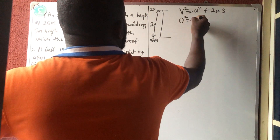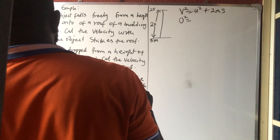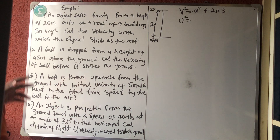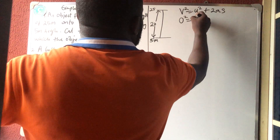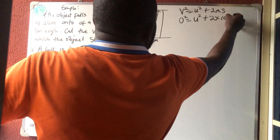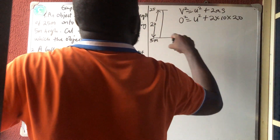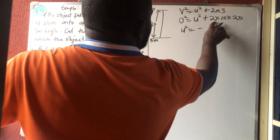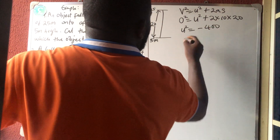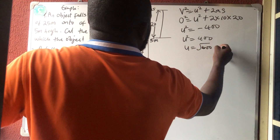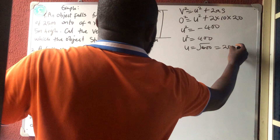So 0 squared is equal to U squared plus 2 times G, which is 10, times the height. The height is 20. So U squared is equal to 400 — we don't use the minus — and the square root of 400 is 20 meters per second.